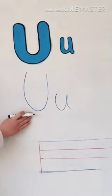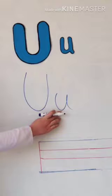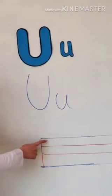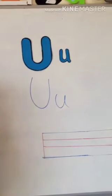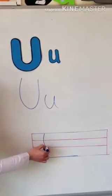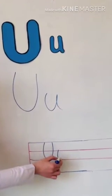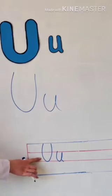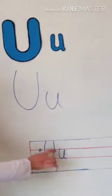This one is capital U. This one is small U. Now let's write it on the lines. We have four lines. Focus on my writing. This one is capital U and this one is small.